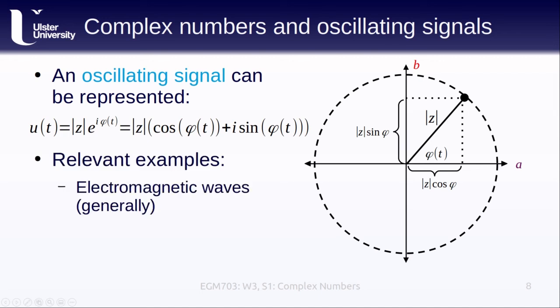Electromagnetic radiation is a wave that oscillates in time. And as we'll see in the rest of the lessons this week, radar signals, which are a specific kind of electromagnetic radiation, can also be represented in this way.